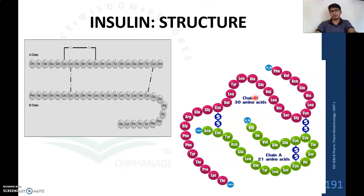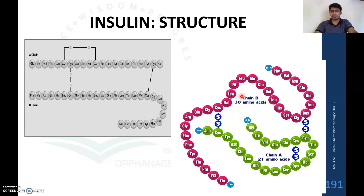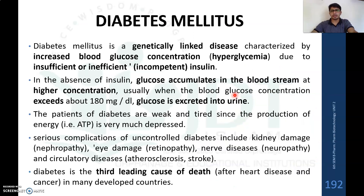This is very important because the genes for the separate chain B and chain A are synthesized, and these genes are used for the production of recombinant DNA technology insulin.